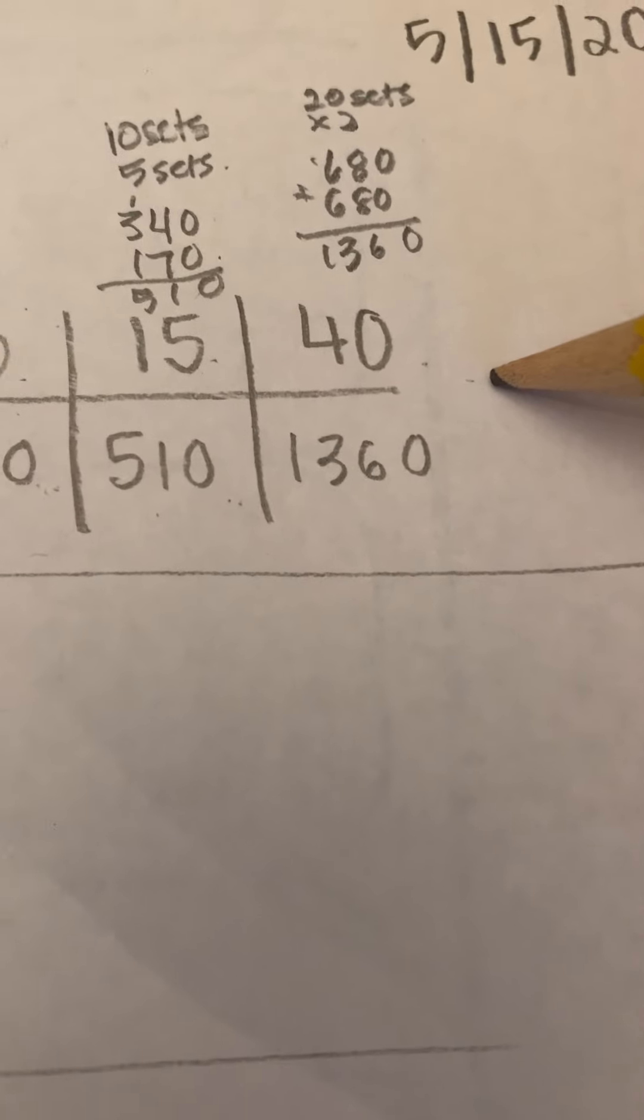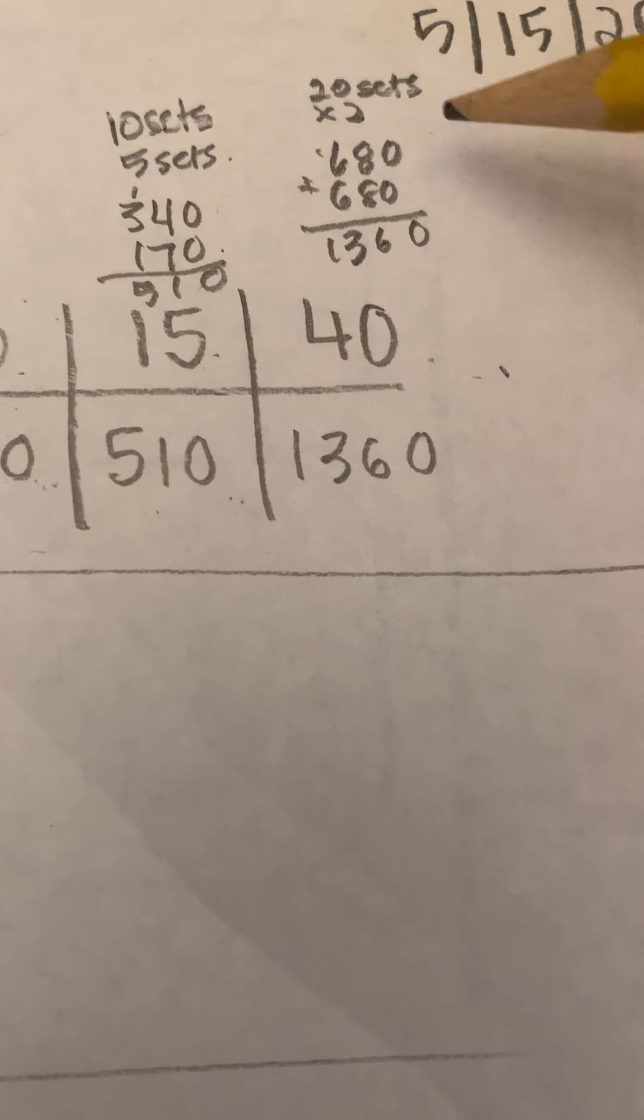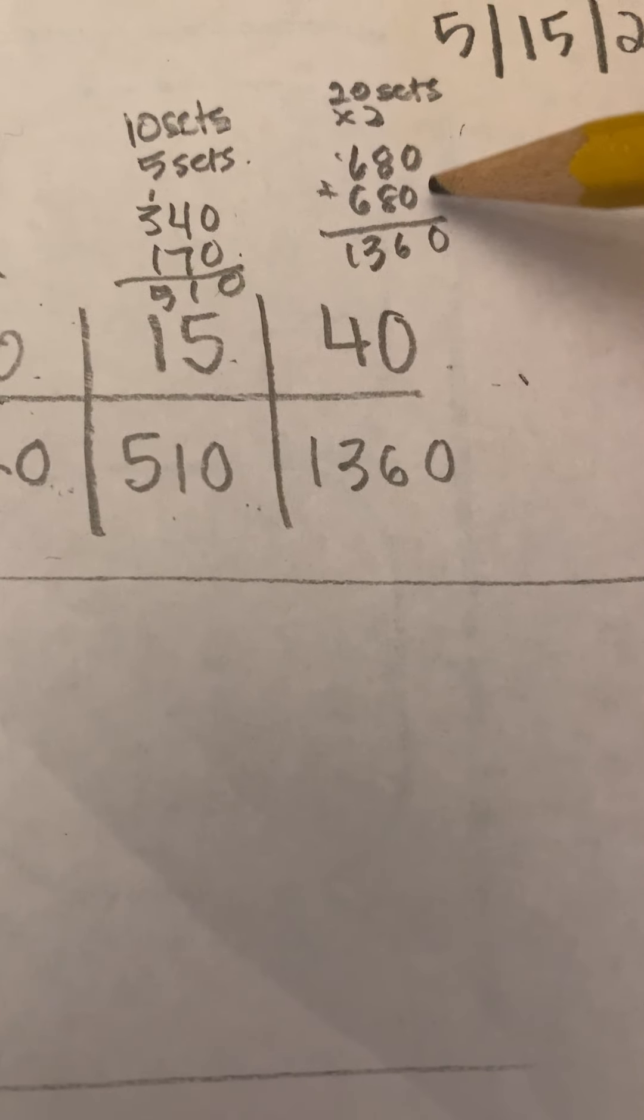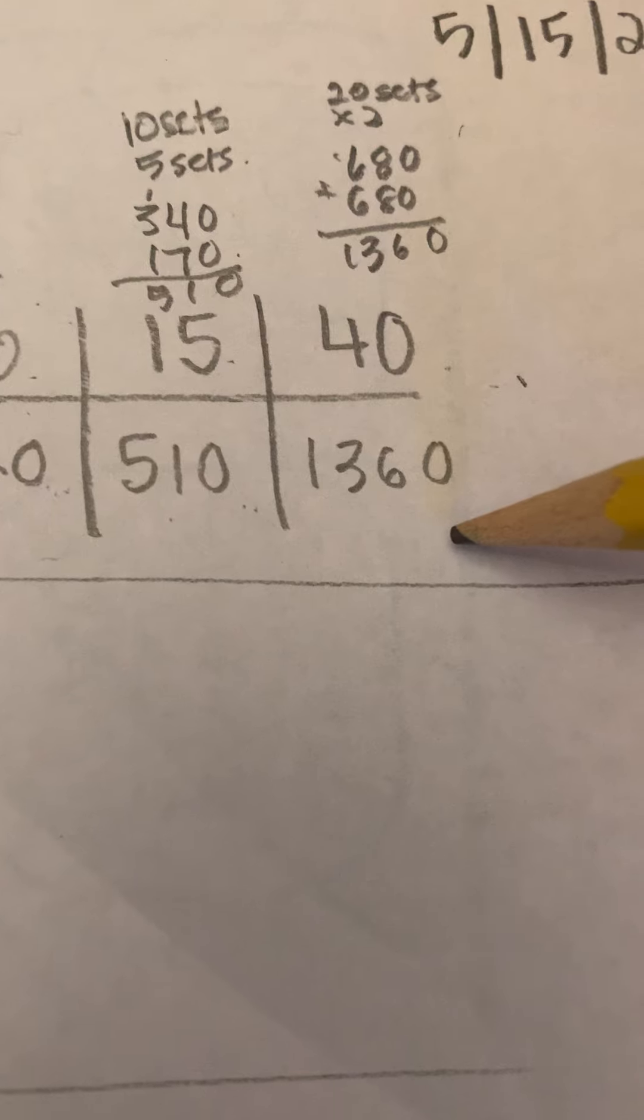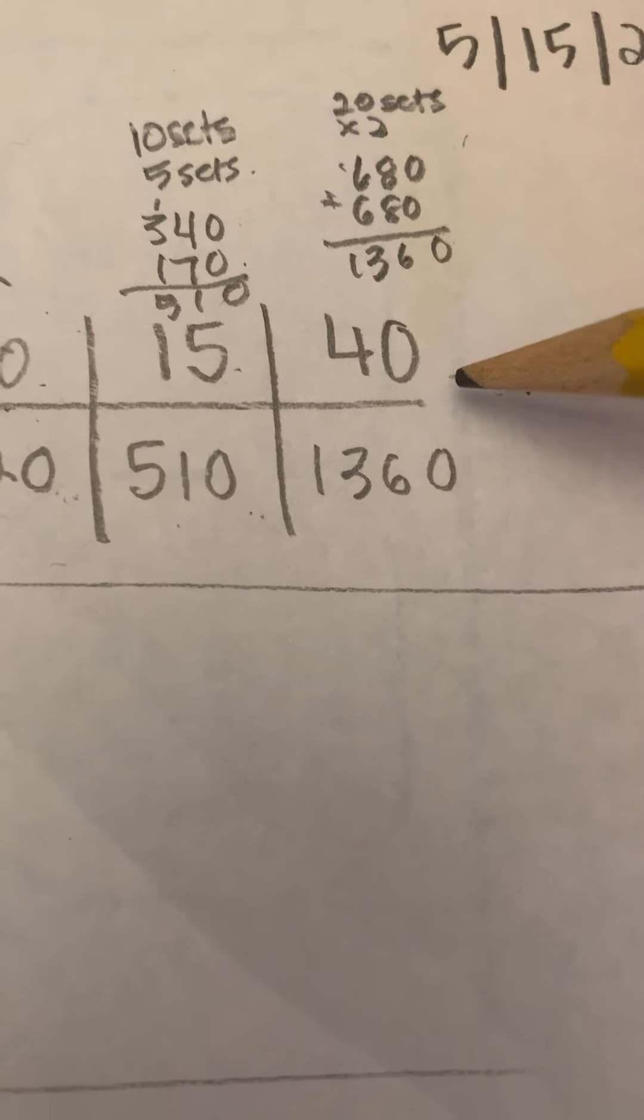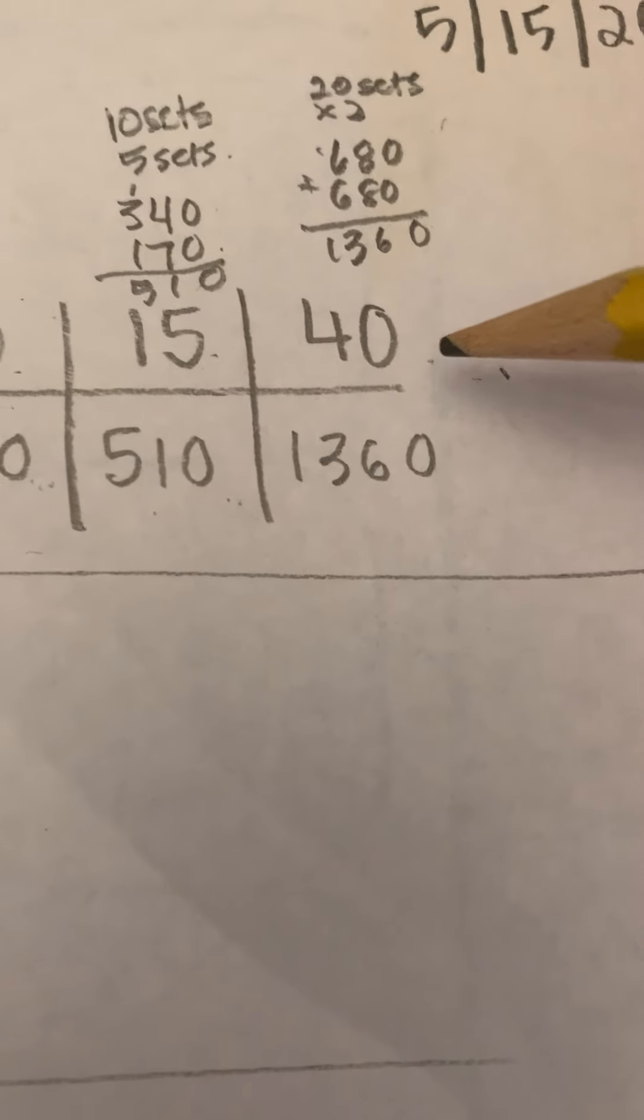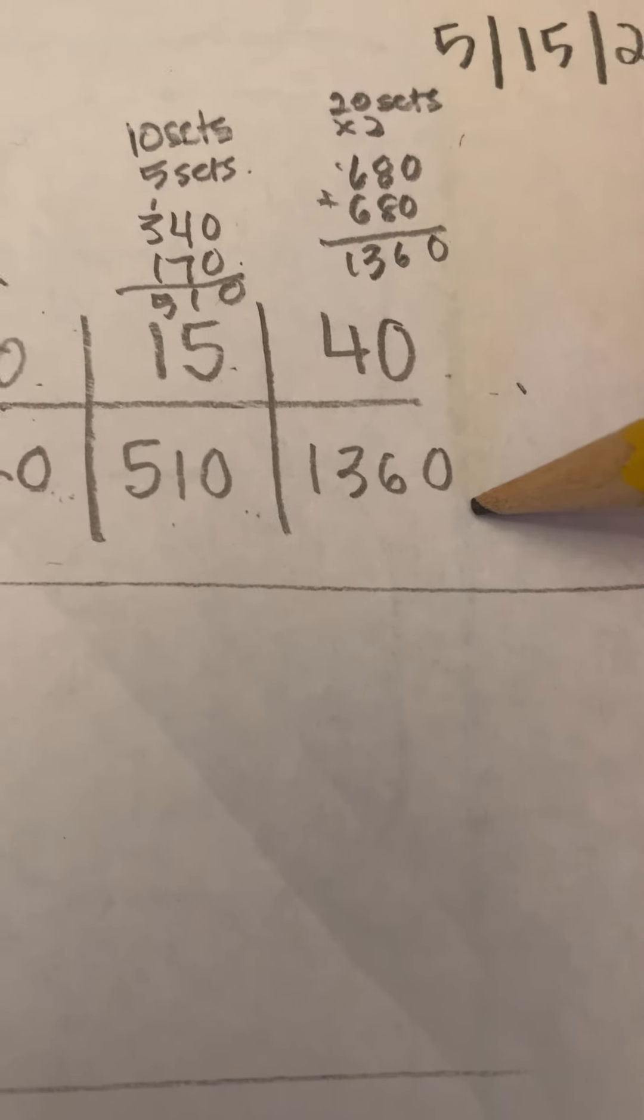Last one, 40 sets. I could have doubled 20, which I did here, 680 plus 680 equals 1,360. I could have done 30 plus 10. Anyway, and you'll get that same answer.